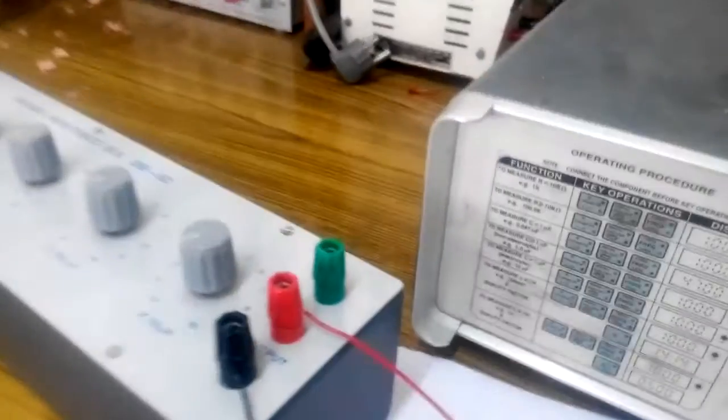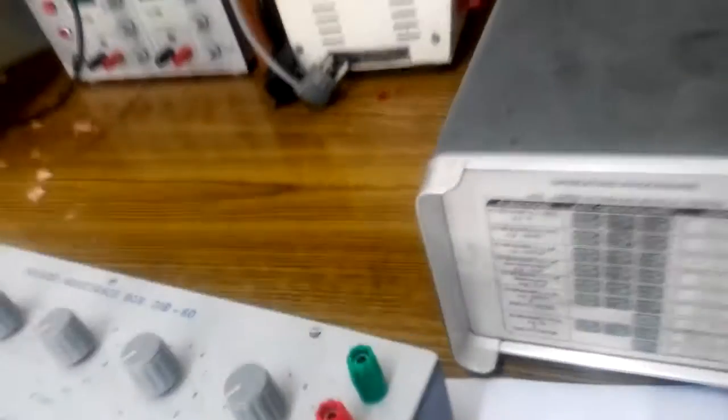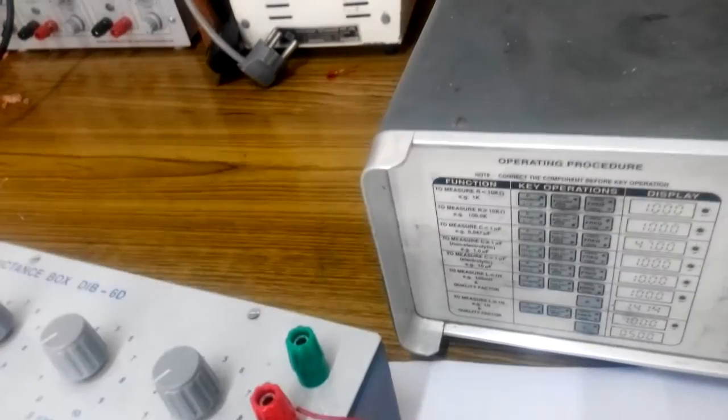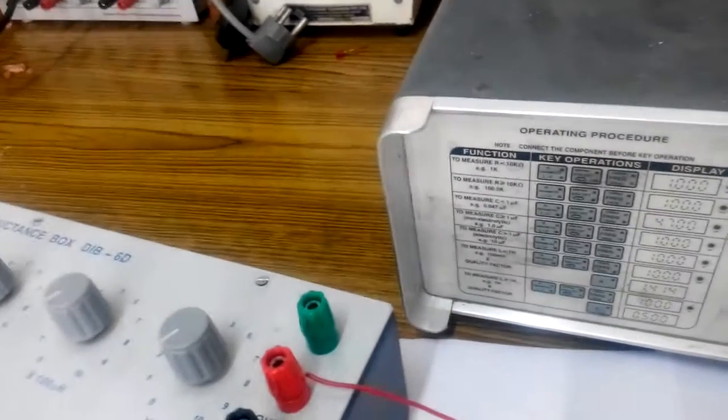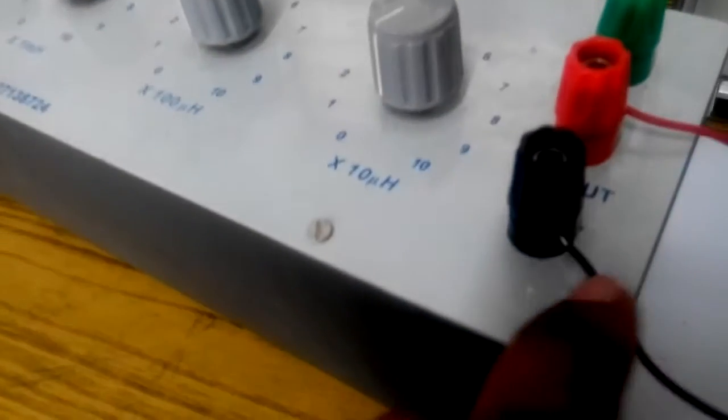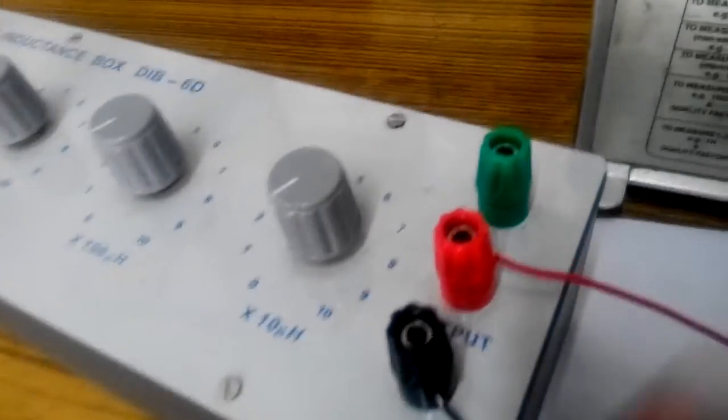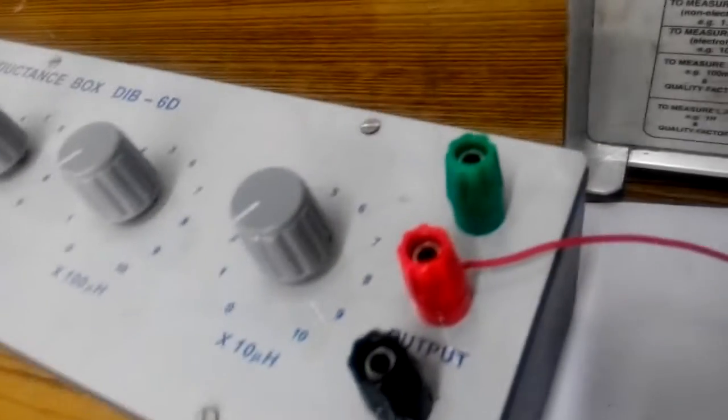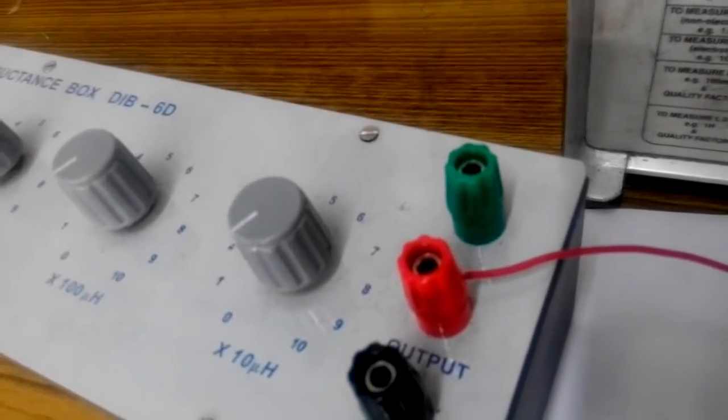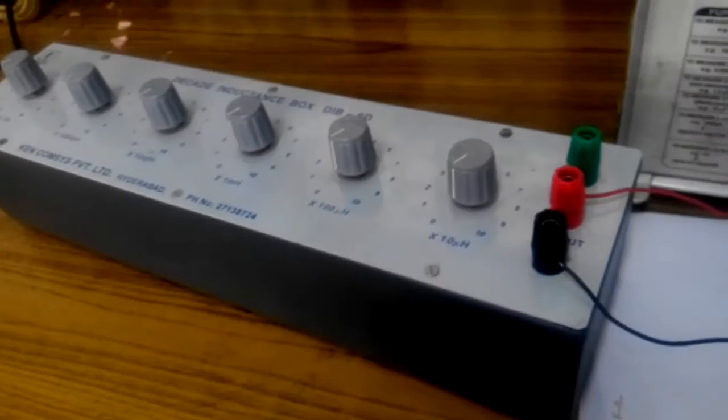Now, the thing that you have to remember carefully is that while connecting your decade inductance box, please make sure that no plastic part of your wire goes inside. If your plastic wire goes inside, the results that you will be getting are highly error-prone.